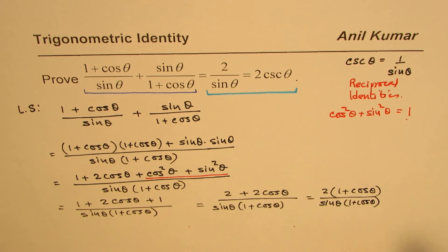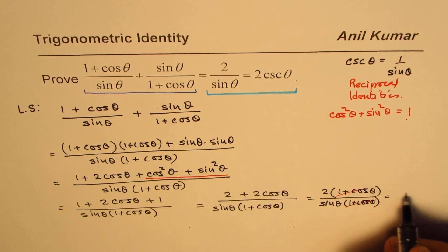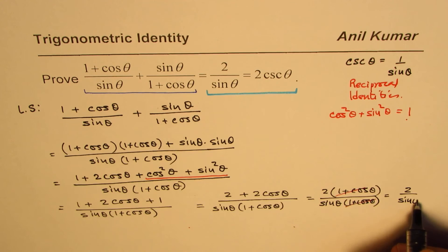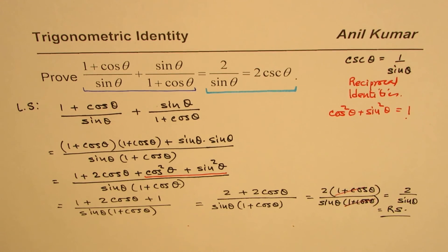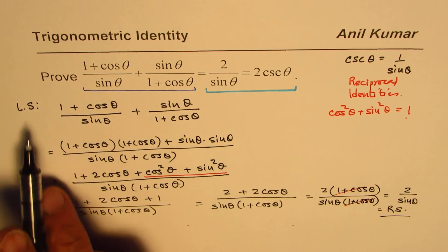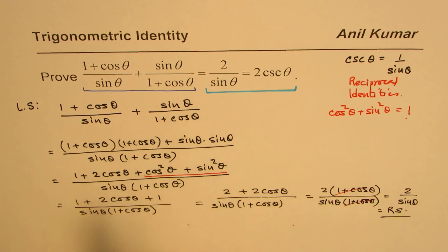Now (1 + cosθ) is a common factor that cancels out, leaving us with 2/sinθ, which is the right side. We have proved that the left side equals the right side, so this identity is always true.